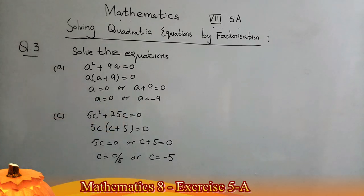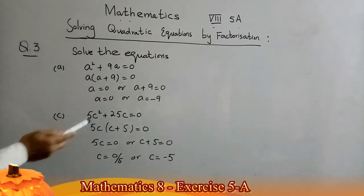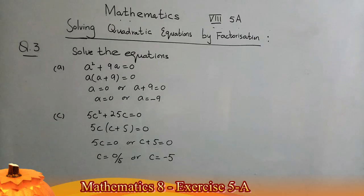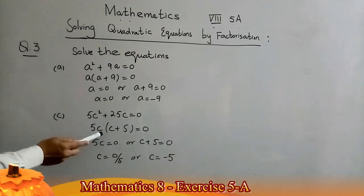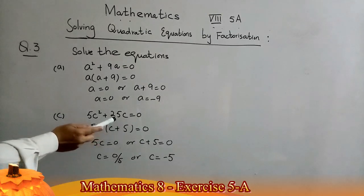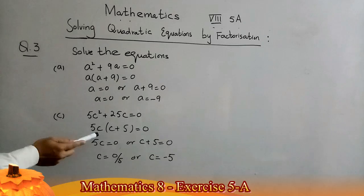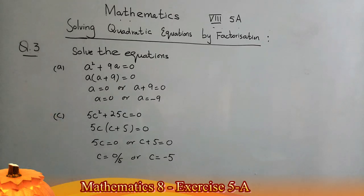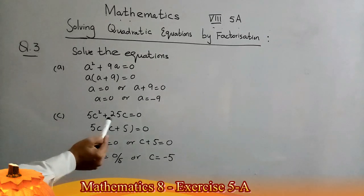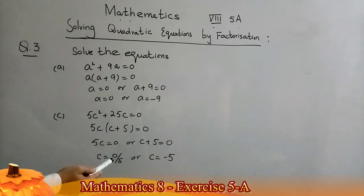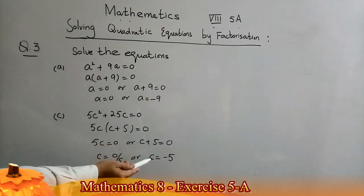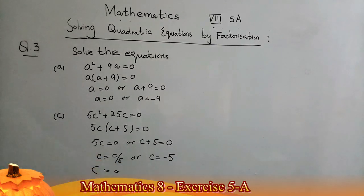Solve for c: 5c² + 25c = 0. Again we have two terms and the common factor is 5c, so taking 5c as common: 5c(c + 5) = 0. Either 5c = 0 or c + 5 = 0, giving c = 0 or c = −5. That is the solution of the given equation.